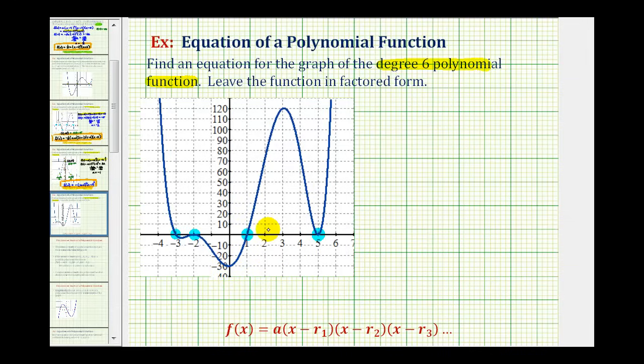Because of how the function behaves, we can see that some of the roots have a multiplicity that's greater than one. If a function crosses the x-axis, then the root or zero has an odd multiplicity. If it touches the x-axis but doesn't cross, the multiplicity is even.